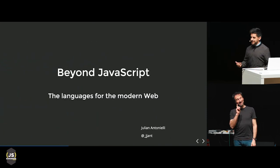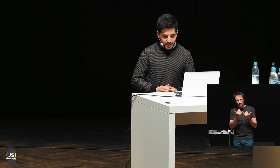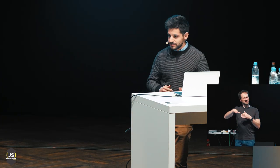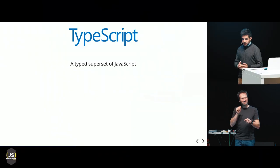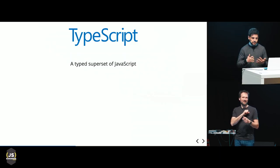So welcome to my talk. This is called 'Beyond JavaScript: The Languages for the Modern Web.' It's a story about how I went out and discovered new languages to write front-end applications. The first obvious choice is TypeScript, which most of you might know is a typed superset of JavaScript. This means that every JS program is a valid TypeScript program, allowing us to slowly add types and start catching mistakes before production.